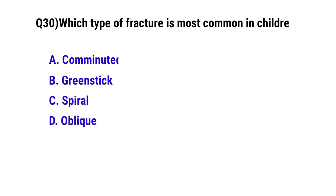Question number 30: Which type of fracture is most common in children? The correct option is B: Greenstick fracture.